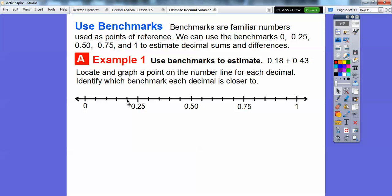And then 43 hundredths is going to be probably somewhere right around here. Here's 25, 30, 35, 40. Somewhere right around there. We're going to locate that right in there.